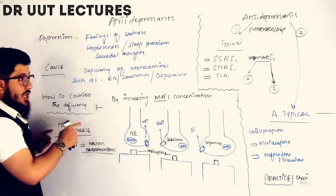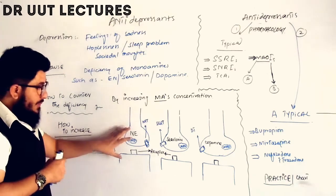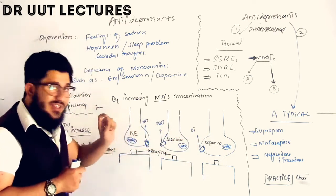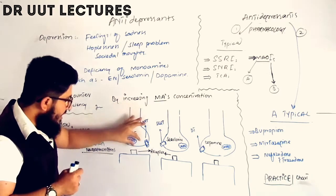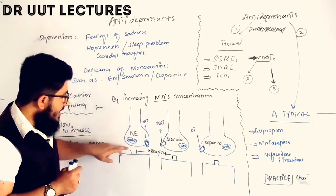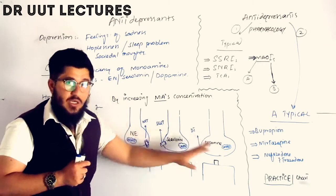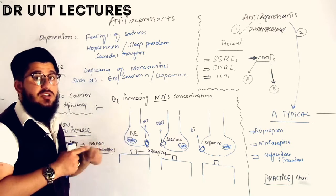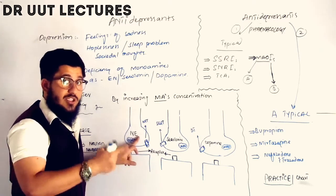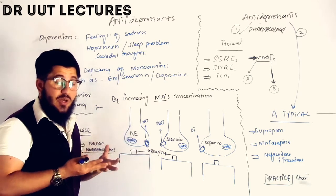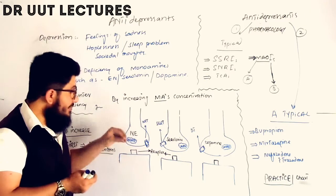To understand how to increase monoamine concentration, we need to understand neurons and neurotransmitters — specifically norepinephrine, serotonin, and dopamine. The simple rule followed by all three neurotransmitters is: the neurotransmitter is released from the neuron into the synapse, binds to the receptor, and activates it. In depression, the concentration of these neurotransmitters decreases, so we need to increase norepinephrine, serotonin, and dopamine in the synapses to restore normal signaling.